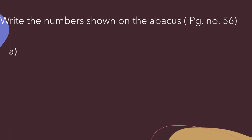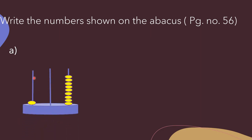Next: write the numbers shown on the abacus. The abacus has spikes and beads. We write the places from right: ones, tens, hundreds. In part A, counting beads at ones place: 1, 2, 3, 4, 5, 6, 7, 8, 9 — that is 9. At tens place there are no beads, so we write 0. At hundreds place there is 1 bead. So the number is 109.